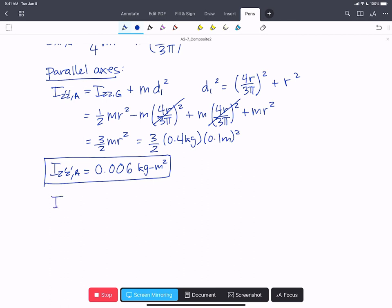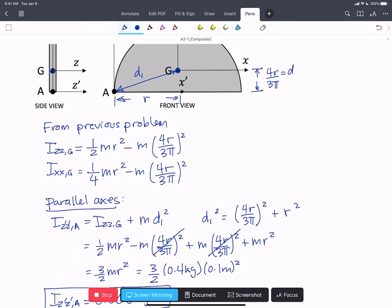Now if we look at i_x'x' about A, that's going to be equal to i_xx about G plus in this case, our distance is just D again, 4r over 3π.